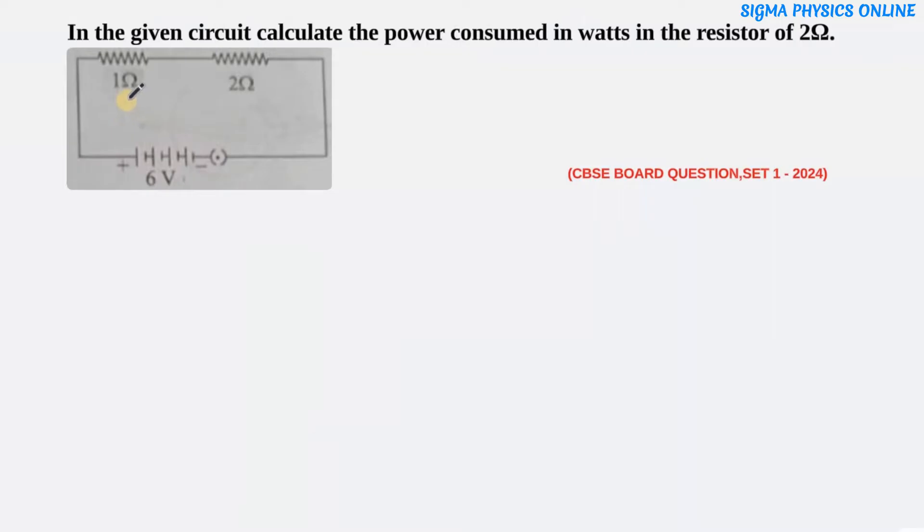Here we have a circuit diagram with two resistors, one of 1 ohm and another of 2 ohm. These two resistors are connected to a battery of 6 volt. We need to find out the power consumed in the 2 ohm resistor.